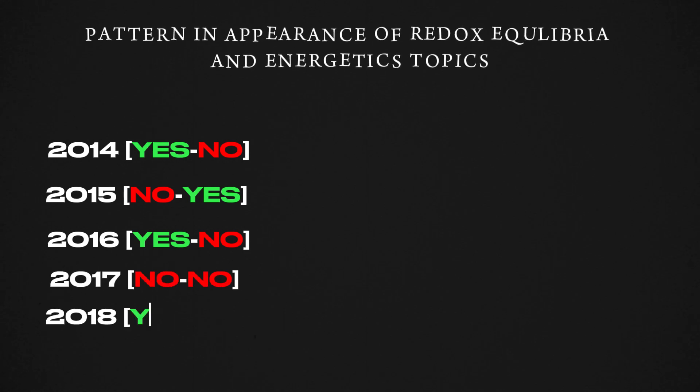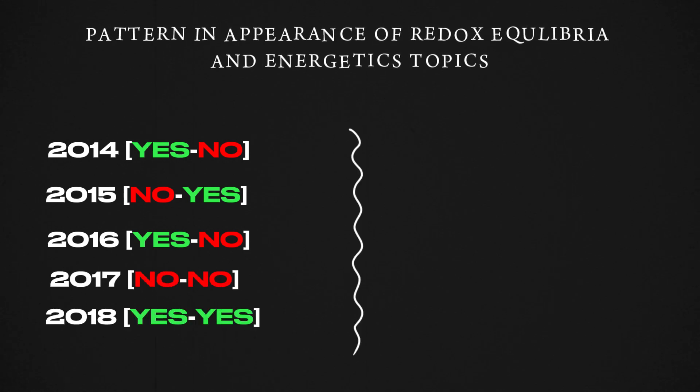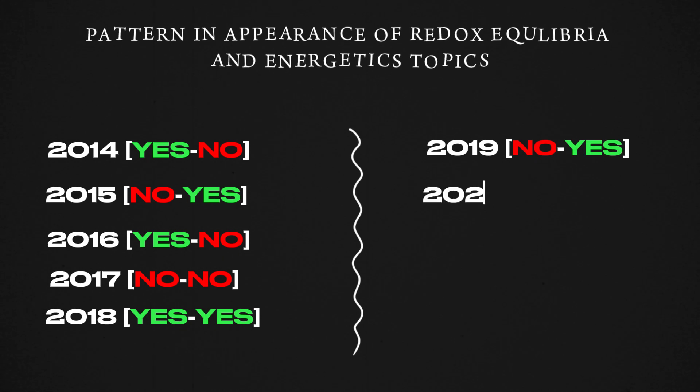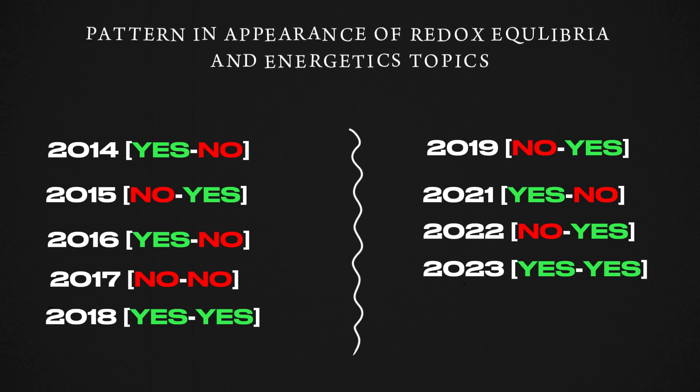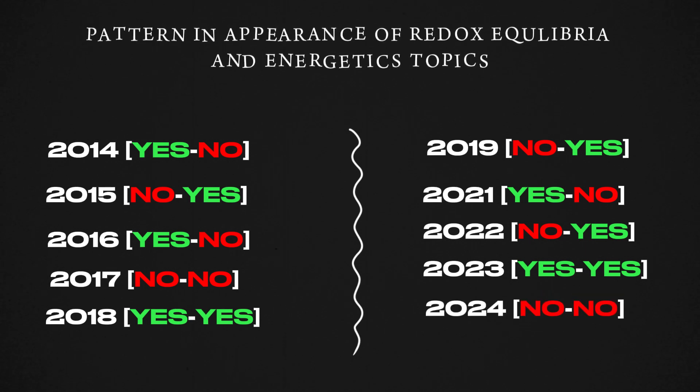A closer inspection reveals a pattern of yes, no, no, yes, yes, no, no, no, yes, yes, yes. If this pattern holds true and it's not merely a coincidence, 2024 should play the no, no cards. Meaning, both redox reactions and energetics should not be on the 2024 paper.